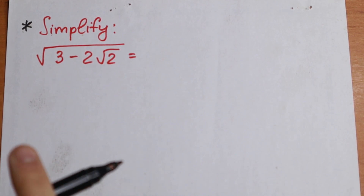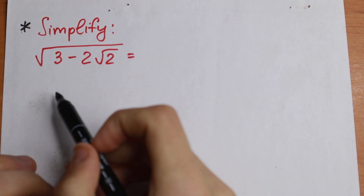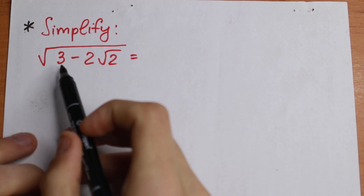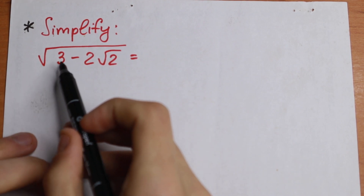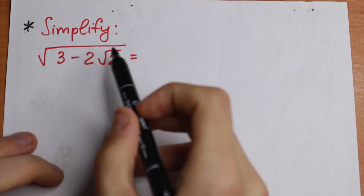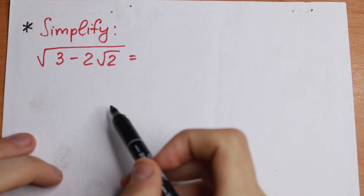Hello everyone! Interesting algebra problem today. We need to simplify this expression: the square root of the square root of 3 minus 2 square root of 2. How can you simplify this expression?